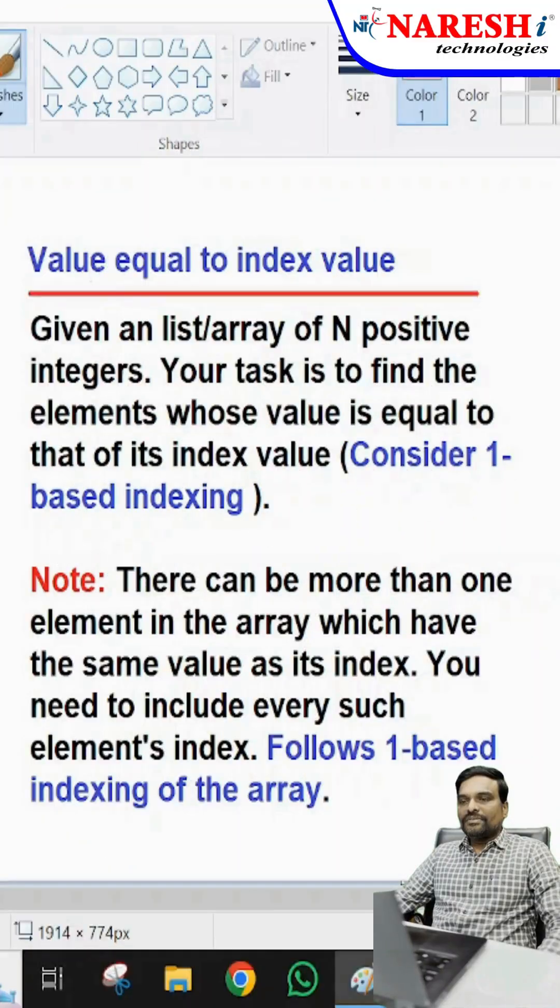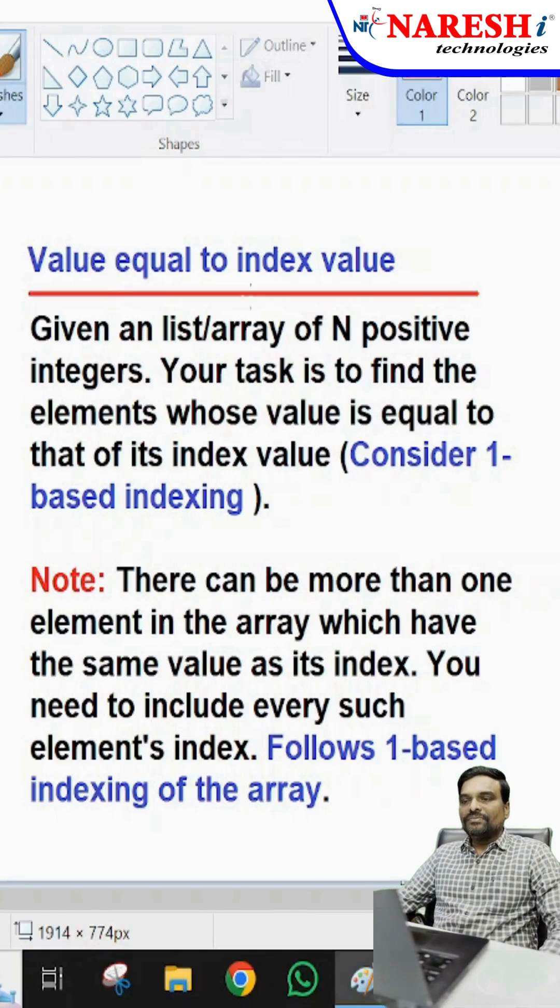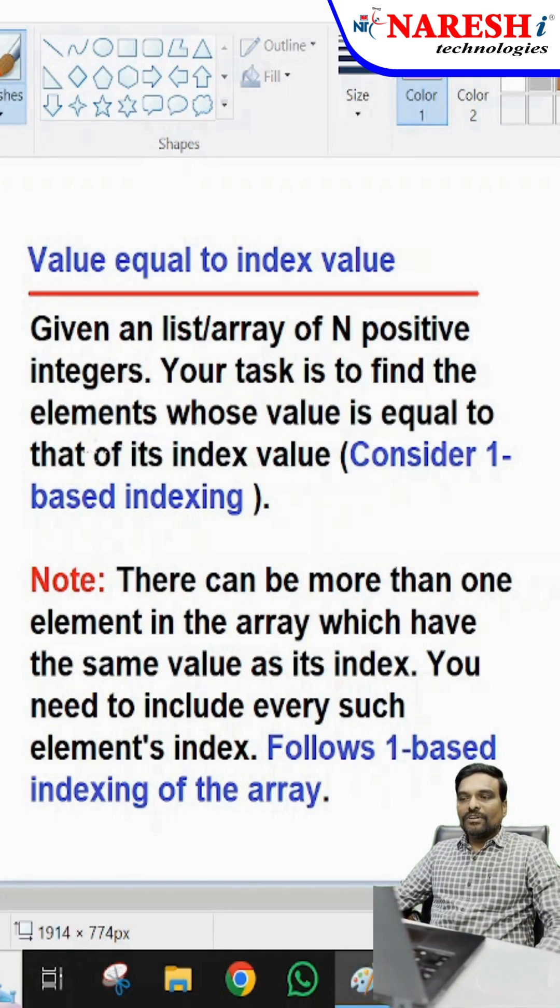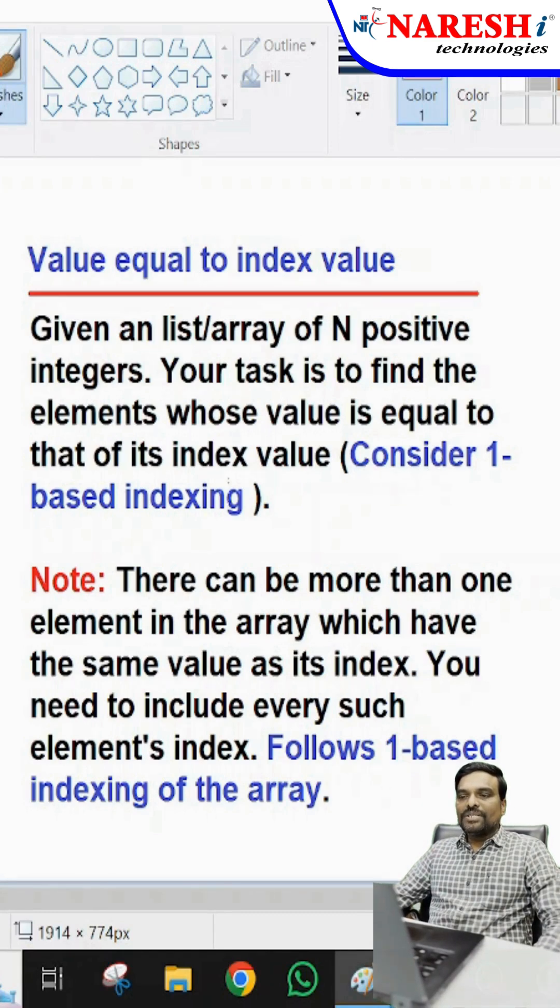Let us see the problem definition. Value equal to index value: given a list or array of N positive integers, your task is to find the elements whose value is equal to that of its index value. Consider 1-based indexing.